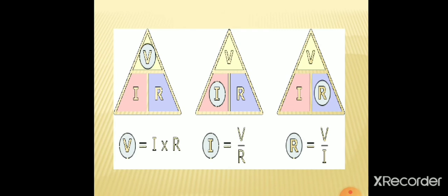This triangle gives you an idea about Ohm's law. You can see V, I, and R inside the triangles. From the triangle we can write V is equivalent to I R, or I is equivalent to V by R, or R is equivalent to V by I. You can remember the equations easily from this Ohm's law triangle.